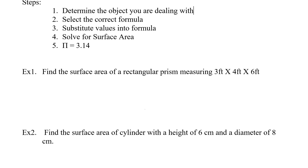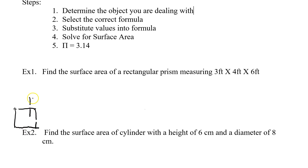Our first example: find the surface area of a rectangular prism measuring three feet by four feet by six feet. The first thing we have to do is determine the object we are dealing with. We said it's a rectangular prism, so we're going to draw our rectangular prism.